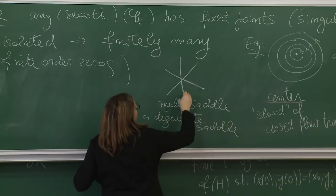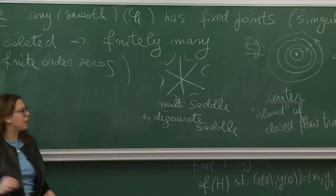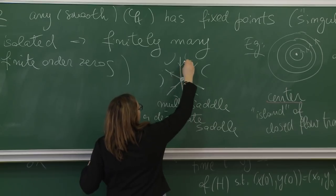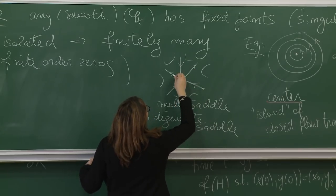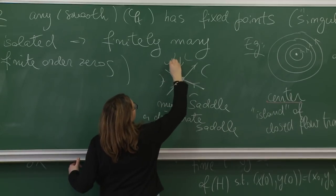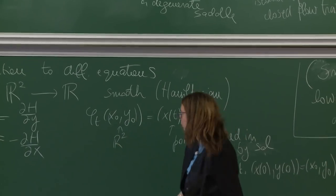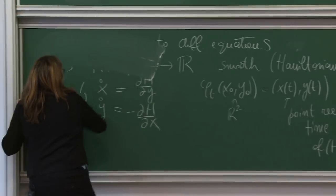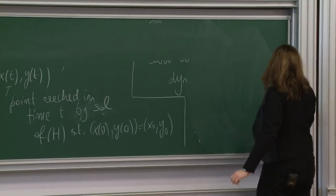There is also what I'll call a multi-saddle or degenerate saddle, which has an even number greater than four of incoming and outgoing separatrices — alternating in and out. These are the types of pictures you will see at the finitely many singular points of your flow.